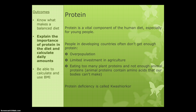Protein is a very important component of our diet, especially for people who are growing. Sources of protein can be a big issue for people in developing countries because they don't get enough, due to factors such as overpopulation or limited investment in agriculture — they may be growing crops rather than raising animals, so not much meat is available. The problem is that if you eat too many plant proteins and not enough animal proteins, you can end up with protein deficiency.